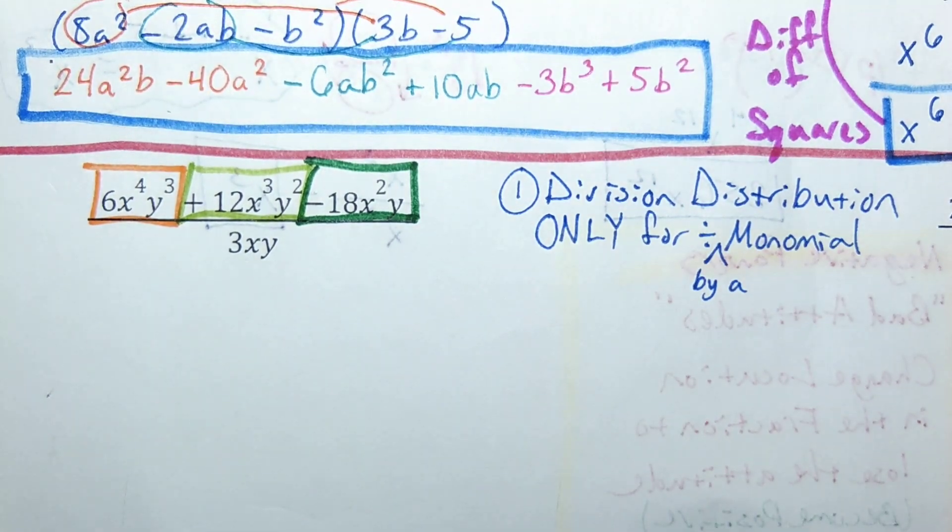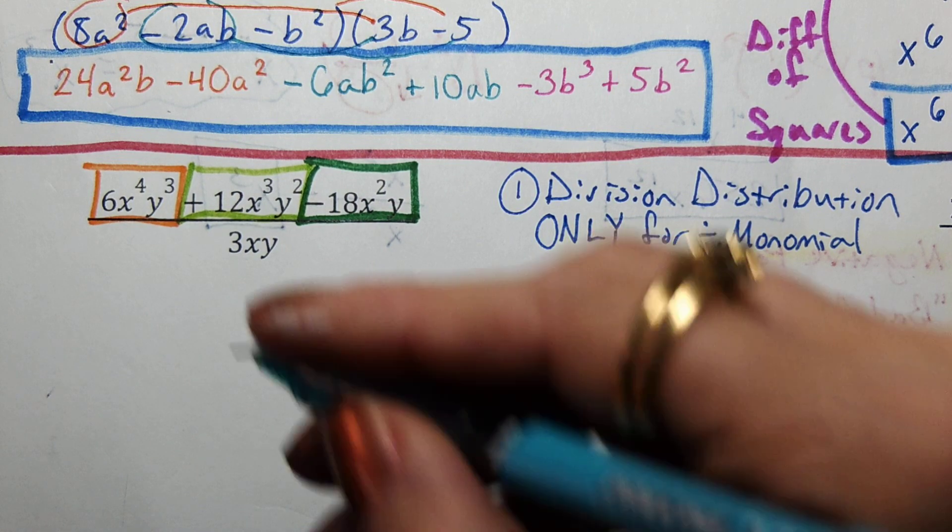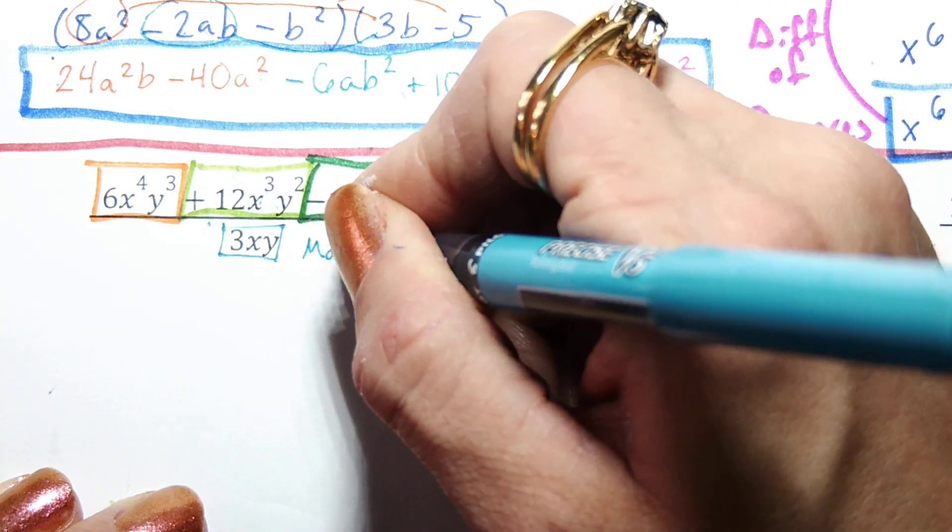So three separate chunks. I've got a three-term polynomial. What separates the chunks? Addition, subtraction. How many chunks do I have on the bottom? Just one. That, my friend, is a monomial that I am dividing by.